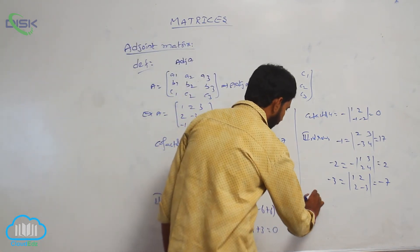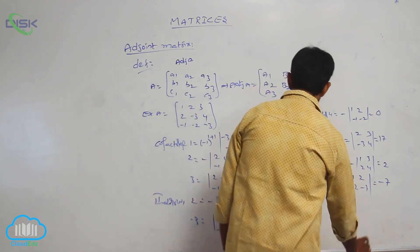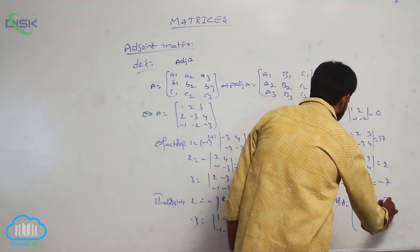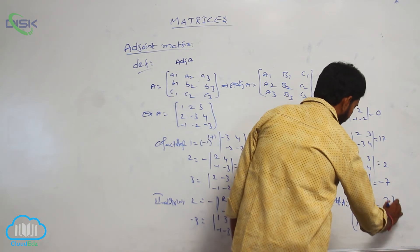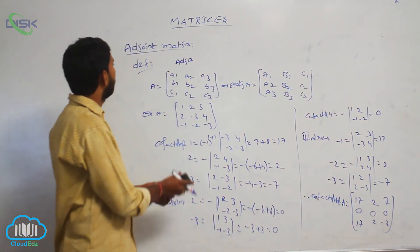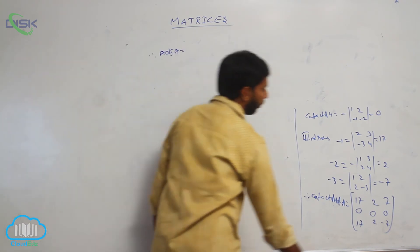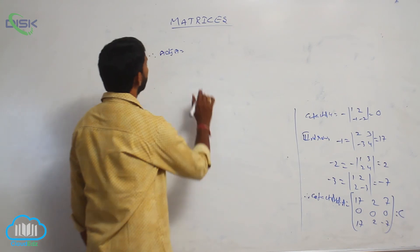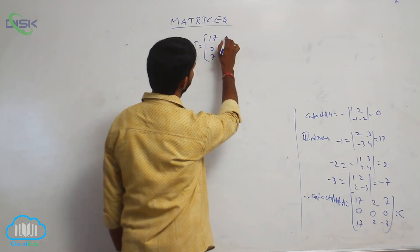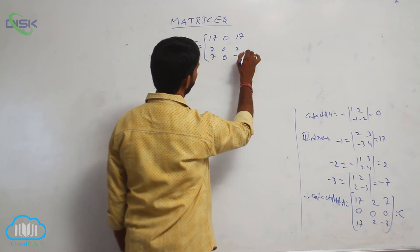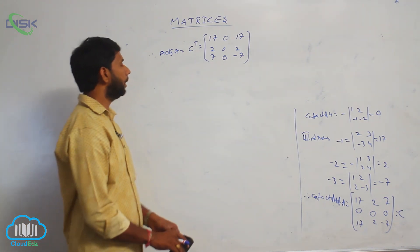Therefore, the cofactor matrix C of A is equal to [17, 2, minus 7; 0, 0, 0; 17, 2, minus 7]. Adjoint A is equal to the transpose of the cofactor matrix C, that is C transpose. The transpose of the cofactor matrix is said to be the adjoint of a matrix.